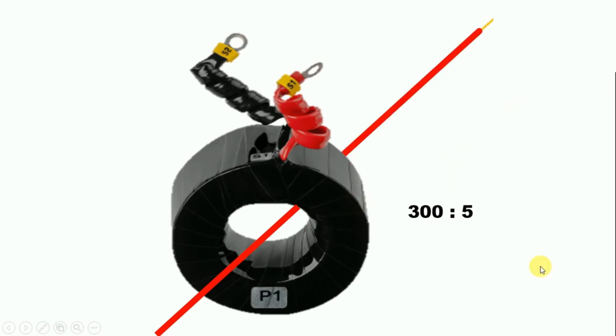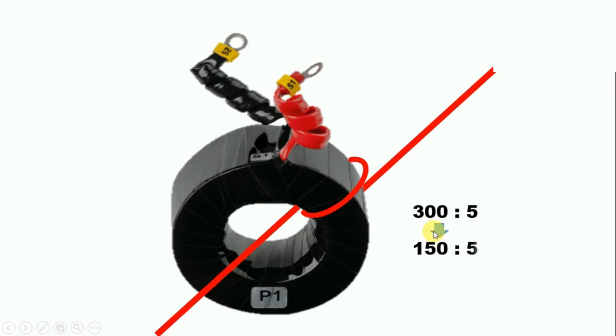Now suppose the ratio of our CT is 300 by 5. If we make one turn of wire, the CT ratio will become 150 by 5. Note one thing: when the ratio changes, only the primary side changes. The ratio of only the primary winding changes, because we are modifying only the primary winding. The secondary winding ratio remains the same.